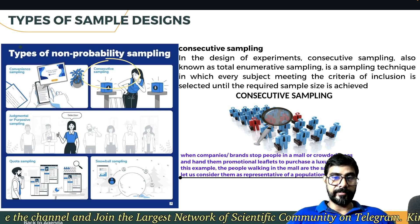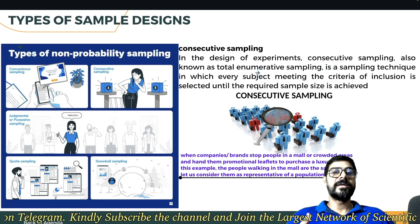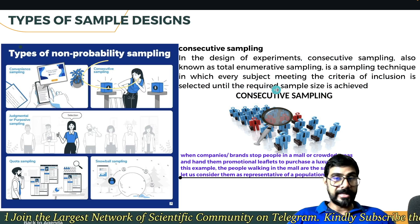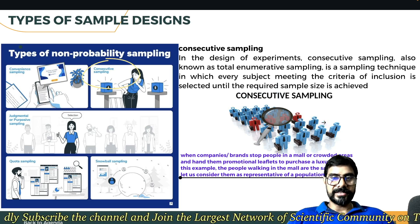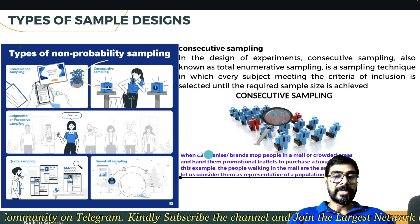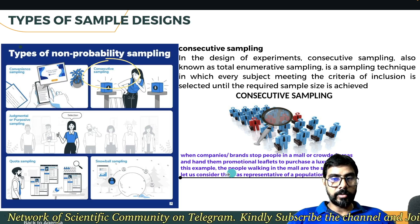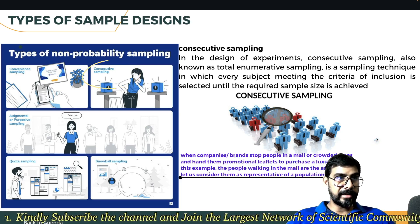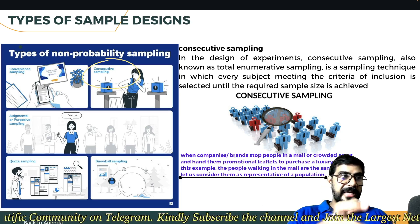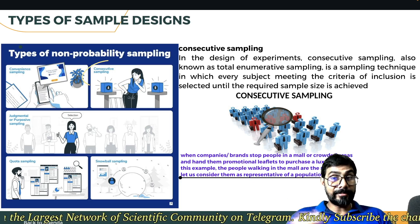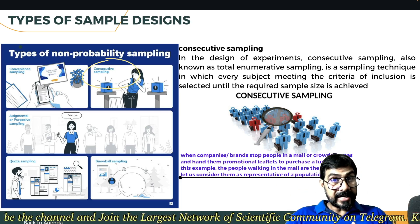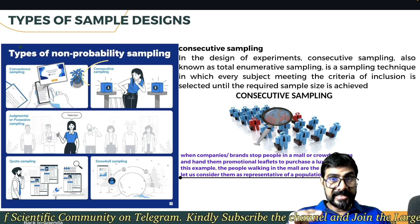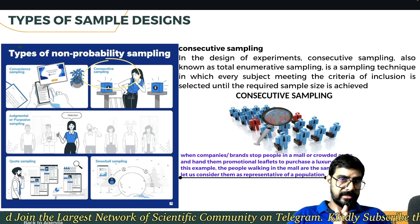Consecutive sampling, also known as total enumerative sampling, is a technique in which every subject meeting the inclusion criteria is selected until the required sample size is achieved. Everyone has an equal chance of coming until our criteria is achieved. For example, when companies stop people in a mall and hand them a promotional leaflet — a salesman standing in the mall distributes papers to everyone walking by. The people walking in the mall are the samples; the target is to distribute the bundle of leaflets. That is consecutive sampling.